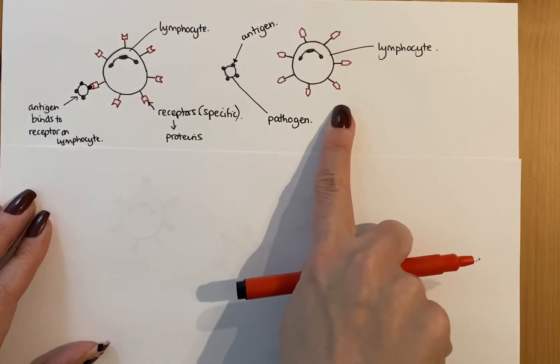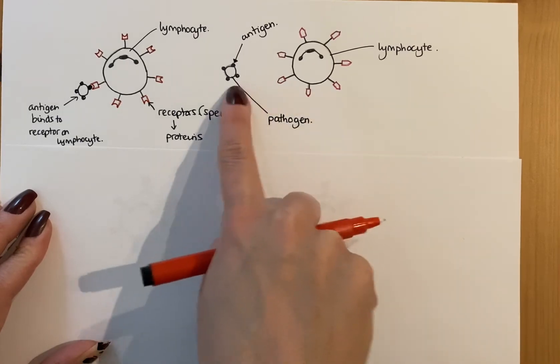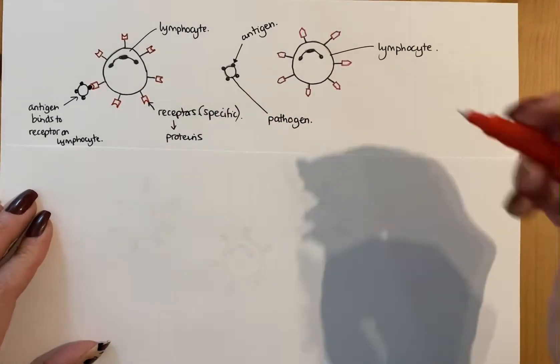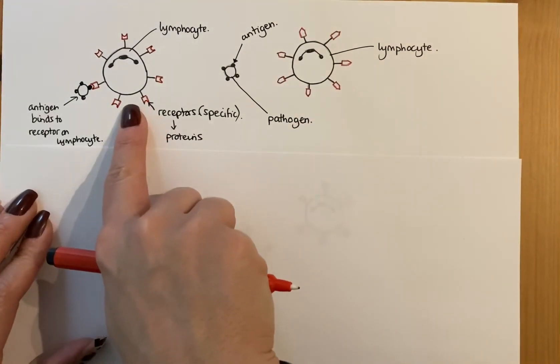Now notice that this one isn't binding because the receptor does not match. The receptor isn't specific to this particular antigen on that pathogen. This might be one for measles, this might be one for Covid or the flu.